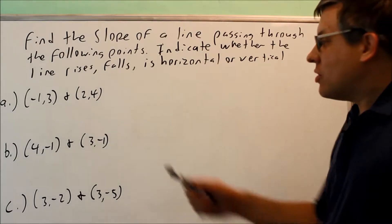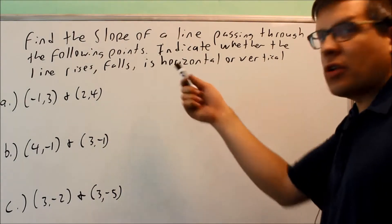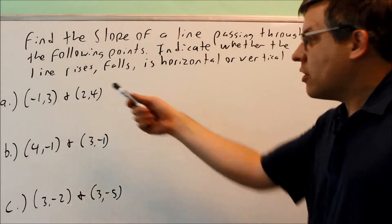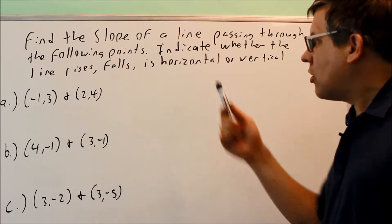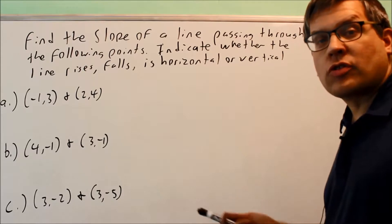We want to find the slope of a line that contains each of these points, and we also want to indicate if the line of the points form, if it rises, falls, if that line is horizontal, or if it's vertical.